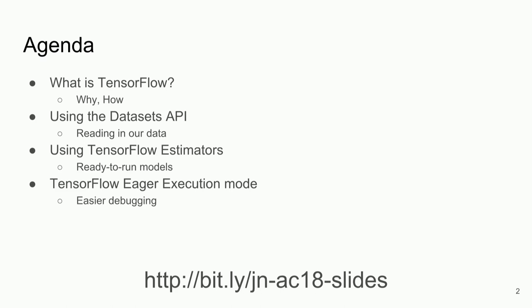The first is the Datasets API for reading in data. The second is using something called TensorFlow estimators, or canned estimators. The third component is something new — introduced officially to TensorFlow two weeks ago in the stable release of TensorFlow 1.7 — which is TensorFlow eager execution mode.